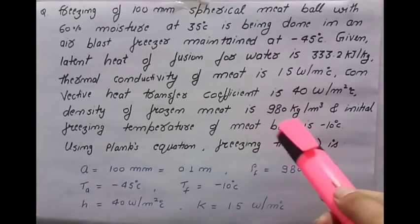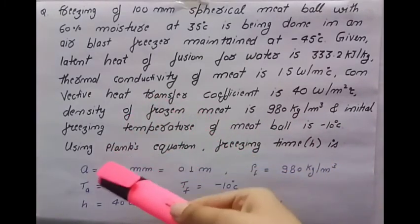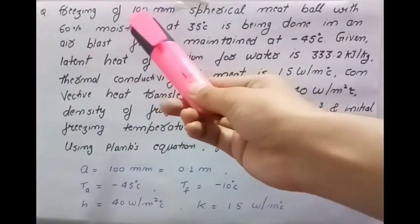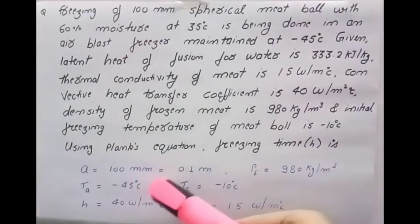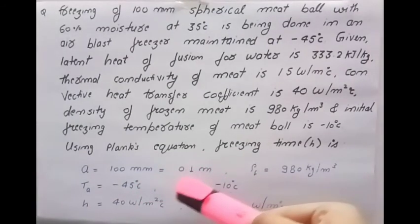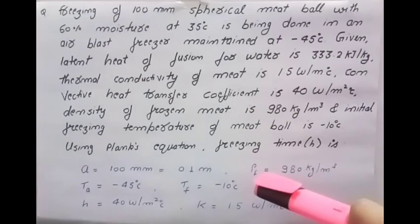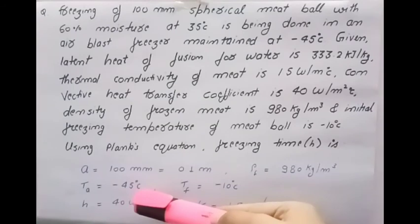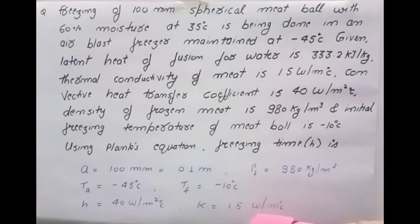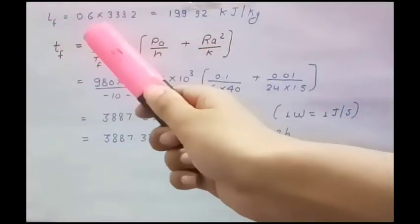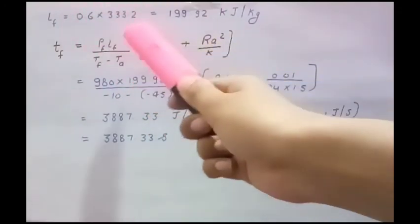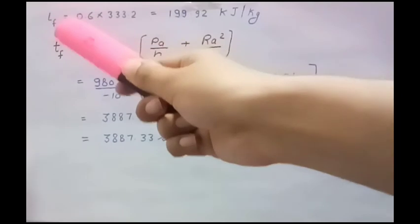This question was once asked in gate examination. Let us discuss the solution. Diameter a is given as 100 millimeter spherical meatball, so 0.1 meter. Rho F is 980 kg per meter cube, Ta is minus 45, Tf is minus 10 degree centigrade, h is 40, K is 1.5. Lf is calculated as 0.6 times 333.2, which is the latent heat of fusion of water, so latent heat of food is 199.92 kilojoule per kg.